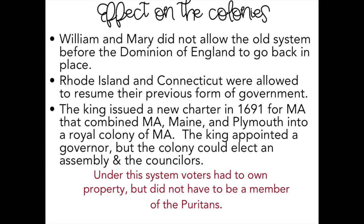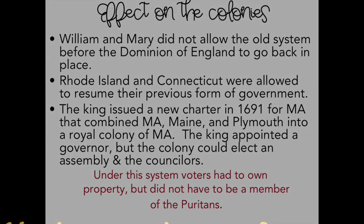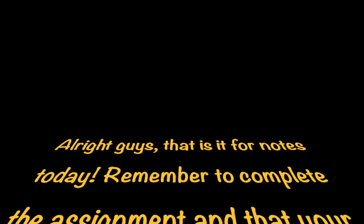Under the new system, voters had to own property. But importantly, they did not have to be Puritan. So people in Plymouth and Maine, if they owned property, could vote as well.